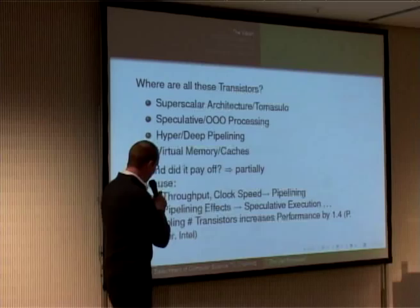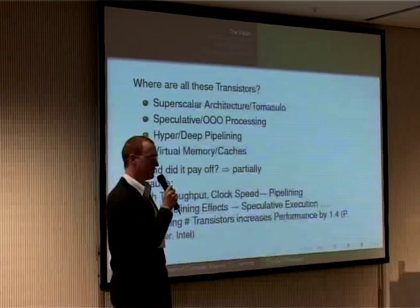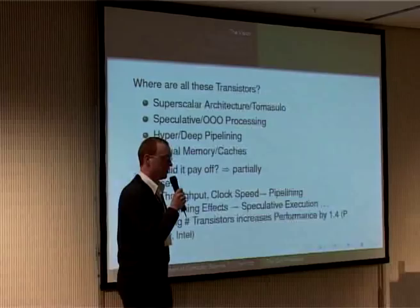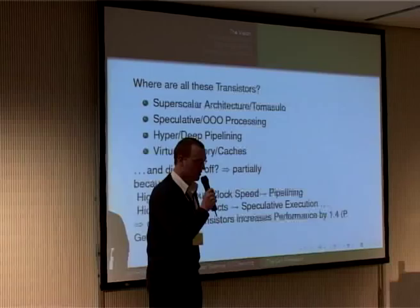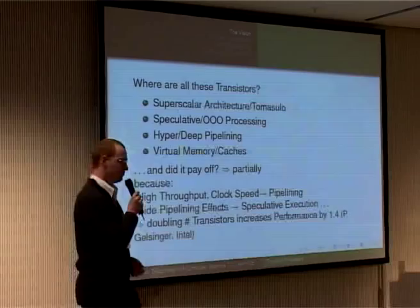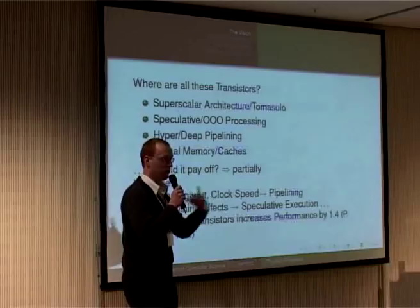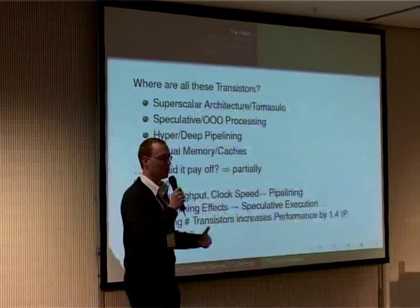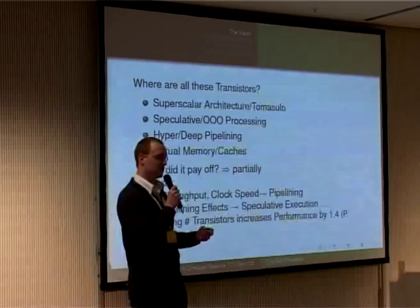Gelsinger's Law basically says that doubling the amount of transistors only increases performance by a factor of 1.4. Check Google for Gelsinger's Law. We can double the transistors and introduce more logic, but we won't find more parallelism in the code — the code is as it is. So the processor guys just move the problem up to the programmer. That's what they're actually doing today — introducing multi-core. Everybody knows if you have a multi-core, your computer doesn't get any faster by itself; you have to program parallel code.